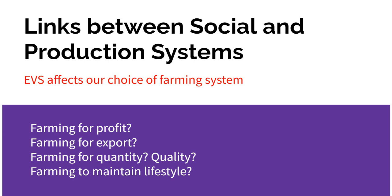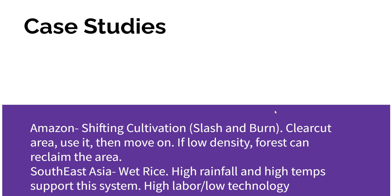Based on your social system, geographical location, climate conditions, and available technology, what sort of production system would you as a country choose? This does affect our EVS — we might want something ecocentric, or something techno-centric as in the United States. Before you decide, ask yourself: Why am I farming — to feed my family or for profit? Am I farming for domestic use or export? Am I farming for quantity or quality? Is this a business or a lifestyle? These questions shape what type of food production system you might have.